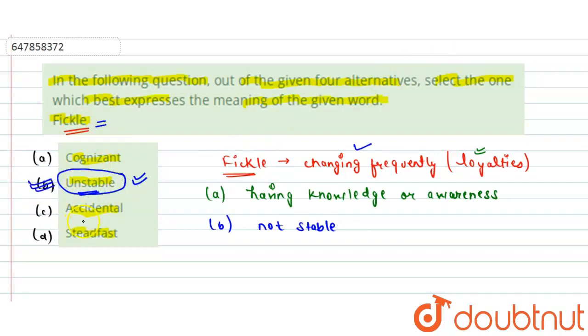The other option we have is accidental. Accidental means happening by chance.